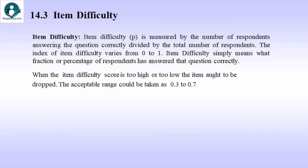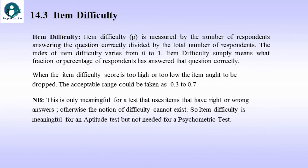When the Item Difficulty score is too high or too low, the item ought to be dropped. Obviously, because if it is too high, it means most of the people could answer the question. It's an easy item. And if very few people would be able to answer the question, then the item difficulty score would be low. So the acceptable range is 0.3 to 0.7, neither too high nor too low. Now please note, this is only meaningful for a test that uses items that have right or wrong answers. Otherwise, the notion of difficulty cannot exist. So item difficulty is meaningful for an aptitude test, but not needed for a psychometric test.